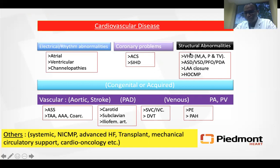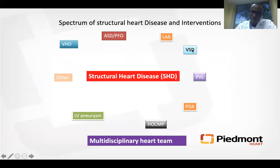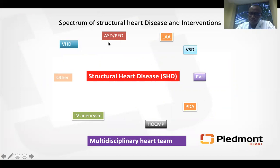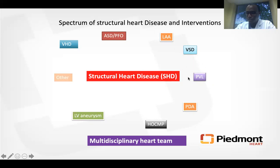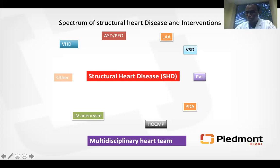Today we will be talking about this segment of cardiovascular medicine that is relatively high yield for you, as you see a lot of valvular heart disease patients back home. The spectrum of structural heart disease spans not just valvular heart disease, but also congenital defects like atrial septal defects, patent foramen ovale, closure of left atrial appendage in patients with AFib, ventricular septal defect closure, paravalvular regurgitation, PDA closure, and management of hypertrophic cardiomyopathy.